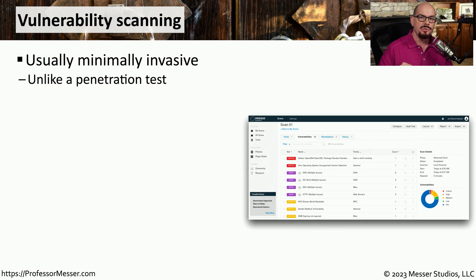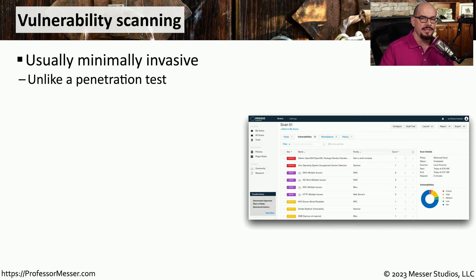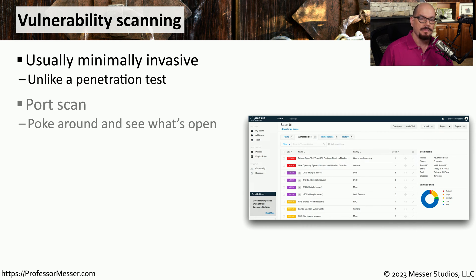Vulnerability scans are used to determine if a system may be susceptible to a type of attack. This process does not perform an attack on the operating system — otherwise, it would be a penetration test. Instead, this is simply checking to see if the potential for an attack exists on a particular system.